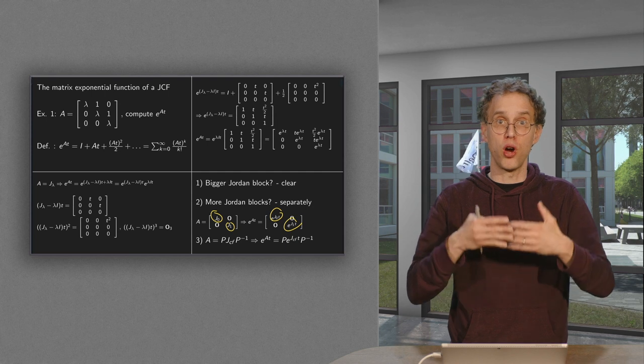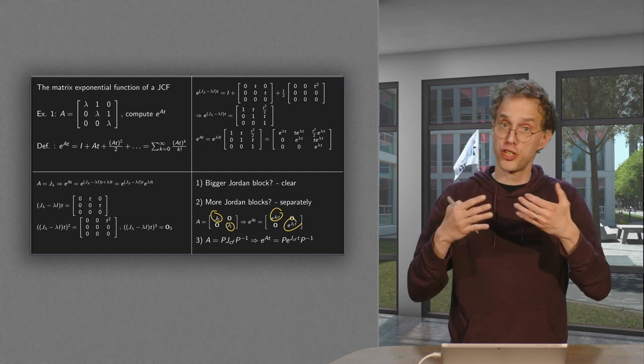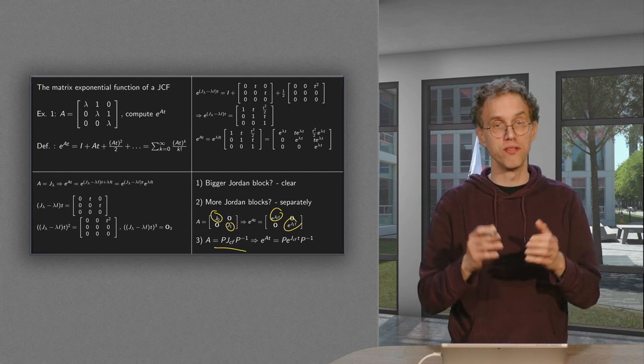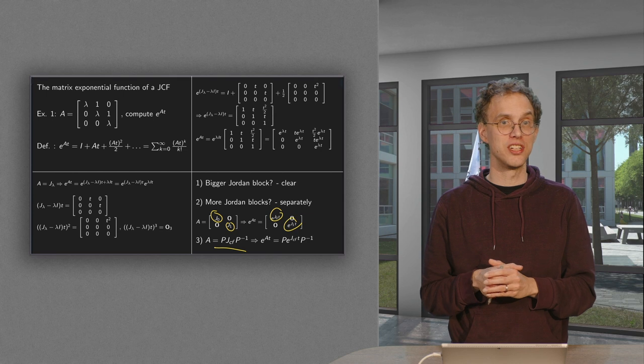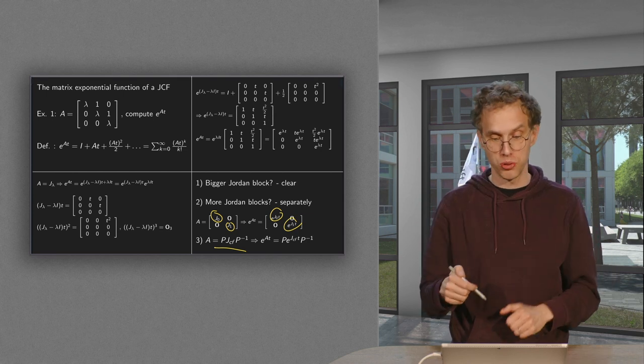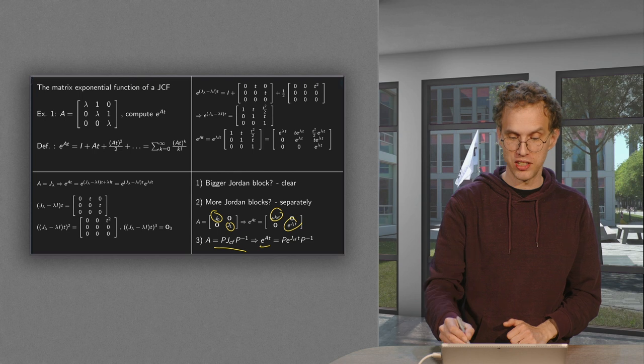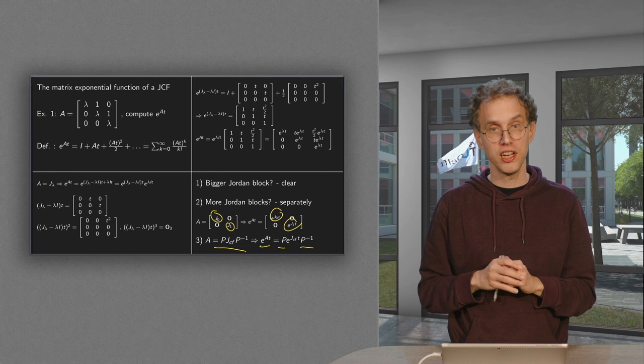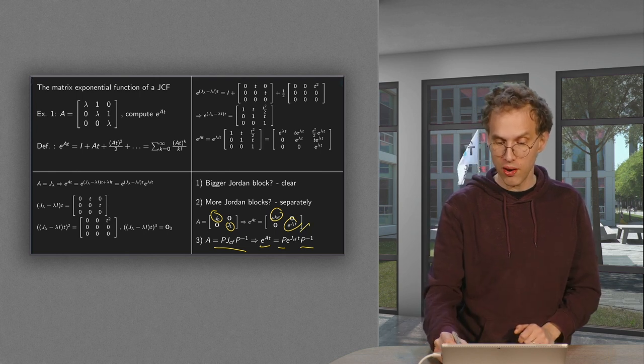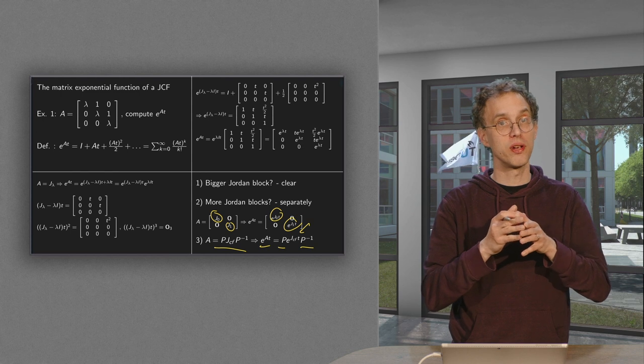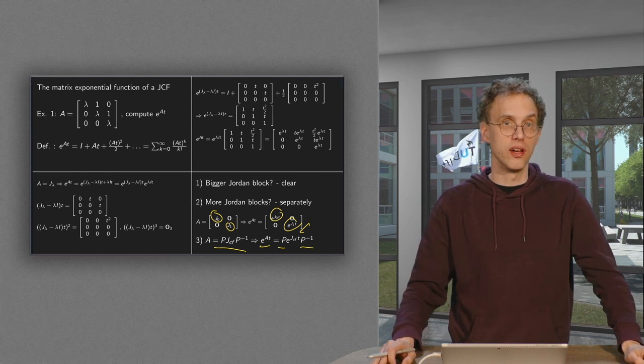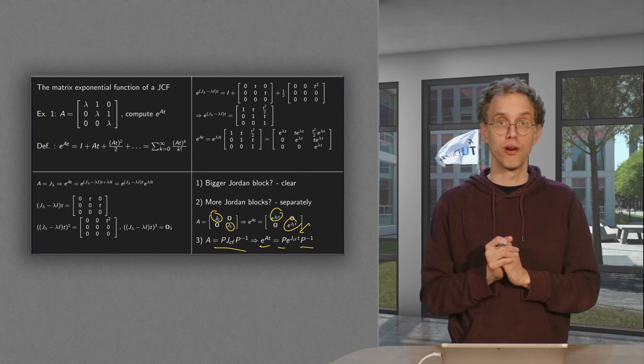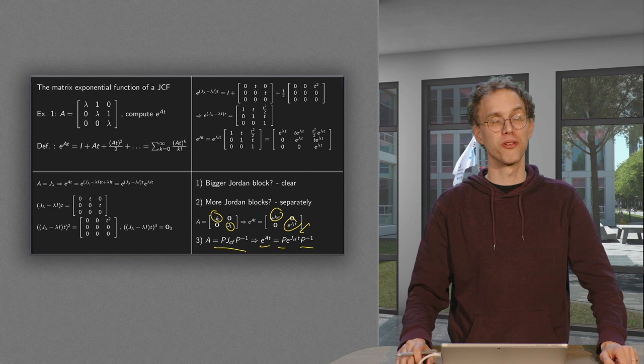And what if you are not in Jordan canonical form, but if you are similar to a Jordan canonical form? So A is P, JCF, P inverse. We can do exactly the same trick as when A was similar to D. What you get is e to the power At equals P and P inverse on the side. And in the middle e to the power JCF times t. And we know how to do the one in the middle. So now we can compute the e to the power At if A is either a Jordan canonical form or if A is similar to a Jordan canonical form.